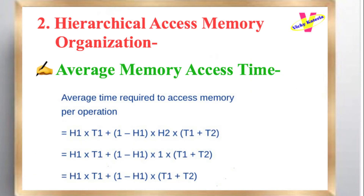Average memory access time: Average time required to access memory per operation equals H1 × T1 + (1 − H1) × (T1 + T2), which simplifies to H1 × T1 + (1 − H1) × (T1 + T2).